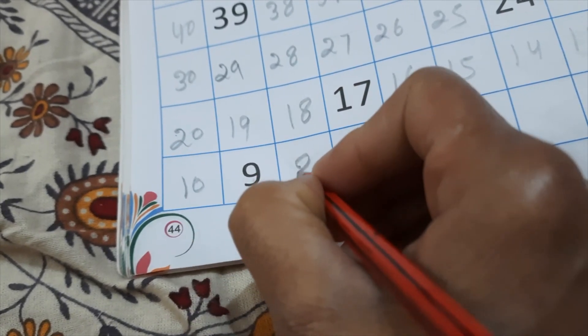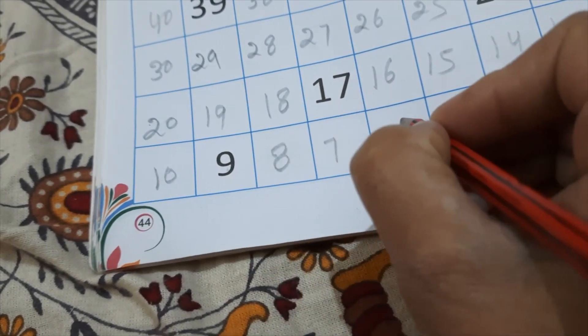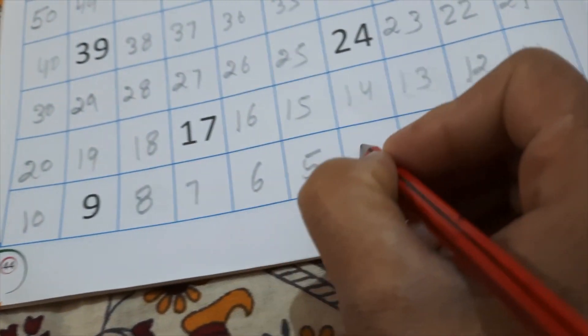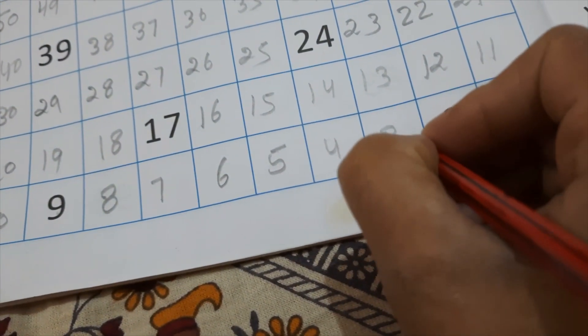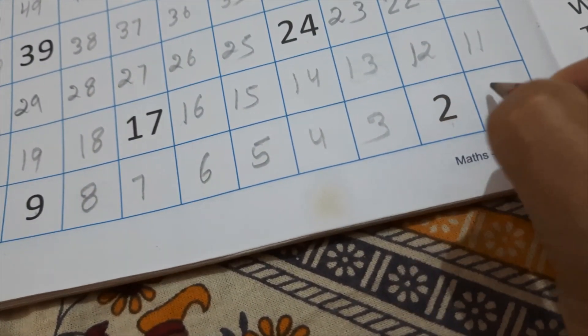9, 8, 7, 6, 5, 4, 3, 2 is already right, and 1.